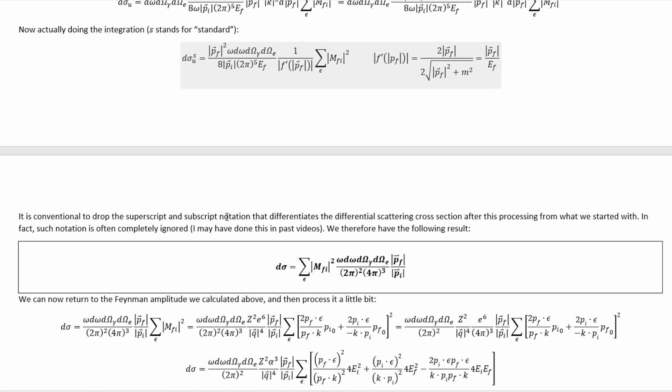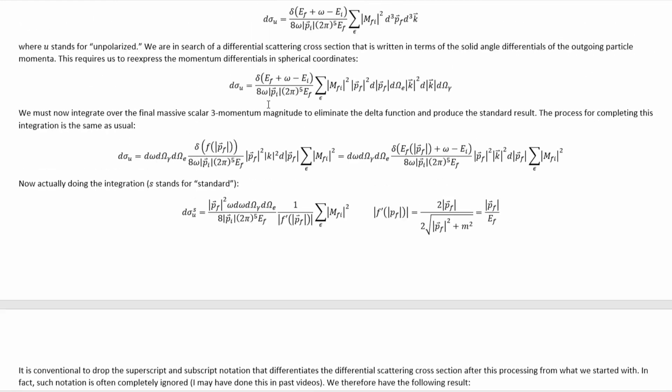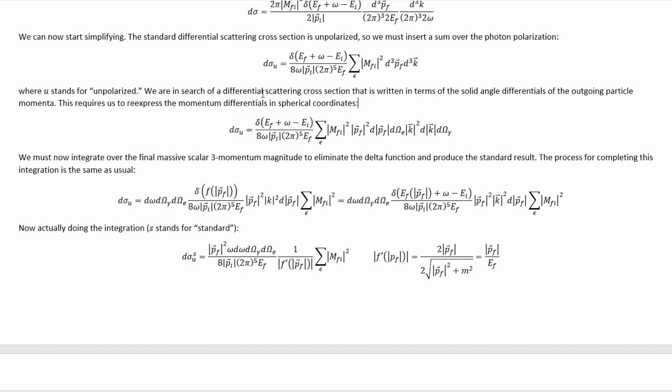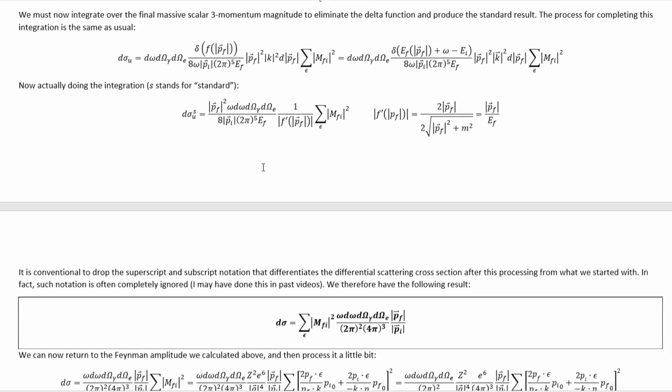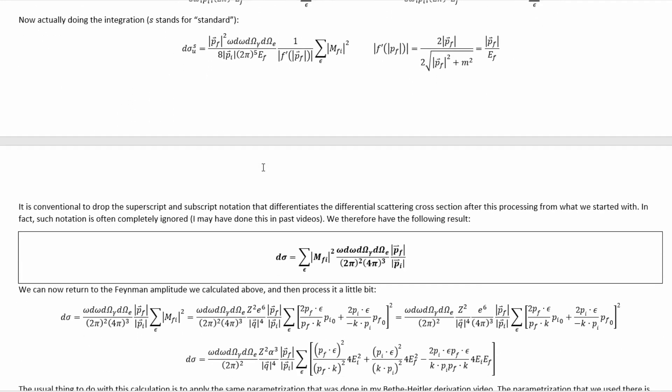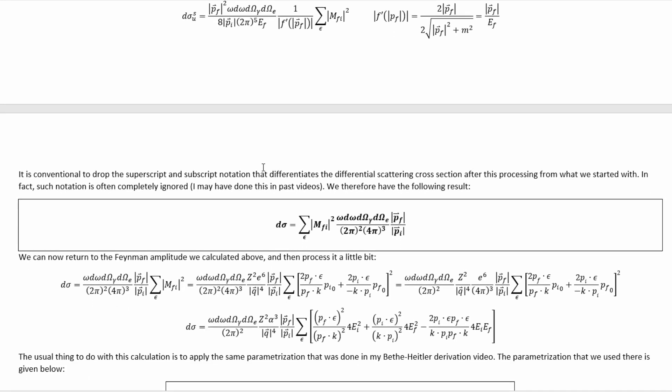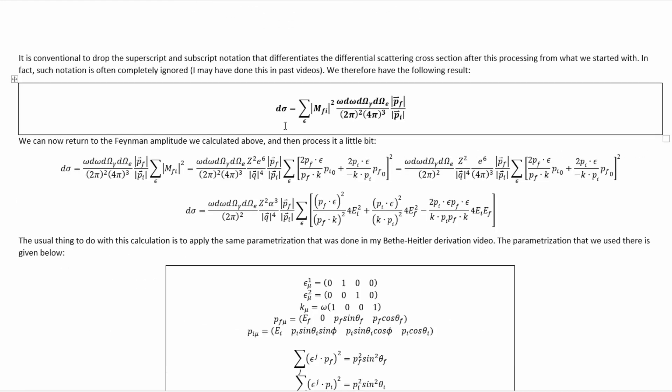It is conventional to drop the superscript and subscript notation that differentiates the differential scattering cross-section after this processing from what we started with. So these two bits of notation there. In fact, such notation is often completely ignored. I may have done this in past videos, and they often ignore it despite the fact that that means you're setting d sigma equal to multiple things that are not technically the same through the document, and you're supposed to just understand what's going on. It's not terribly difficult, which is why they probably do that, but still, it's not technically ideal. But anyway, as I said, all of this leaves us with this result.